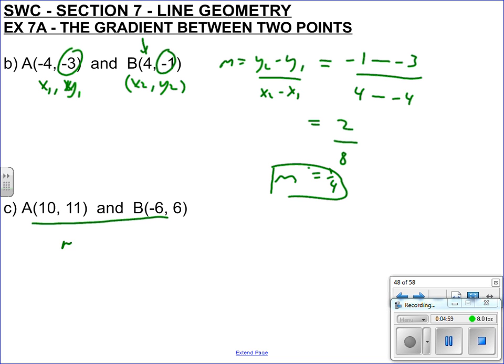Last one here, so we should be getting pretty good at this. So y₂ is 6, y₁ is 11, x₂ is -6, x₁ is 10. Just be careful, it's always change in y over change in x. So that's 6 - 11 = -5, and -6 - 10 = -16, so the minuses cancel and m = 5/16.